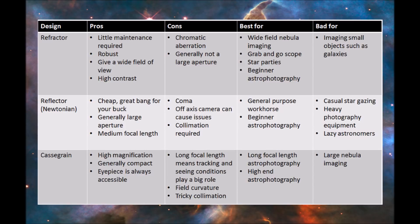Also, because you have to support this large piece of glass at the front, it becomes difficult to get very large aperture refractor telescopes, and they become extremely expensive when you start to get into the 4 to 6 inch range. So generally they're quite small apertures.